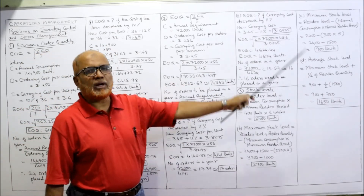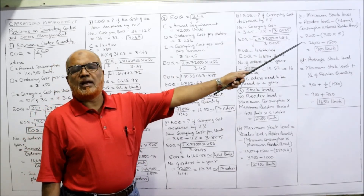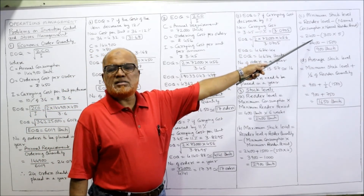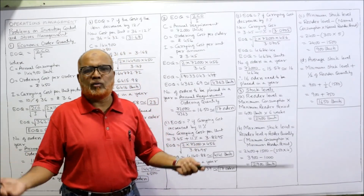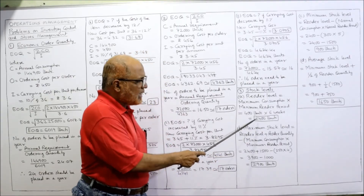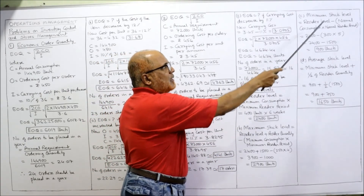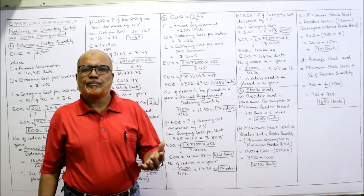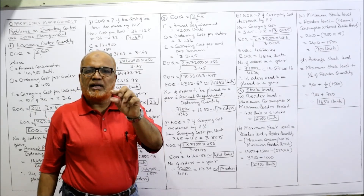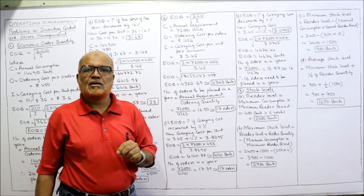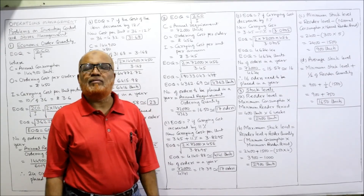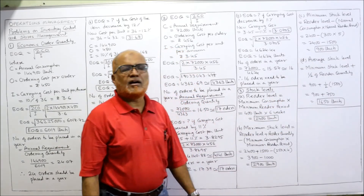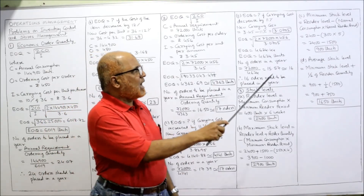Minimum stock level formula: reorder level − (normal consumption × normal reorder period). Reorder level = 2400. Normal consumption = 300 units per week. Normal reorder period is not directly given, so we take the average: (4 + 6) / 2 = 5 weeks. So: 2400 − (300 × 5) = 2400 − 1500 = 900 units. This is the minimum stock level.